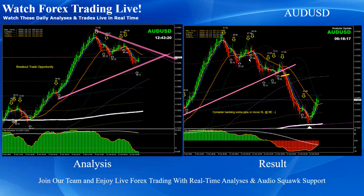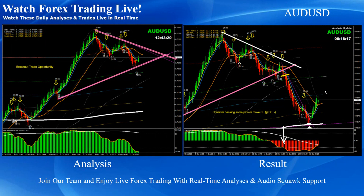Aussie dollar — this was the triangle pattern breakout based on the momentum. As always explained to traders, look towards the momentum. We had a beautiful short trade, final target hit. As soon as price reversed, we mentioned to bank some profit on Aussie dollar and look for another pullback short trade, which we have taken. You will see the analysis later on.